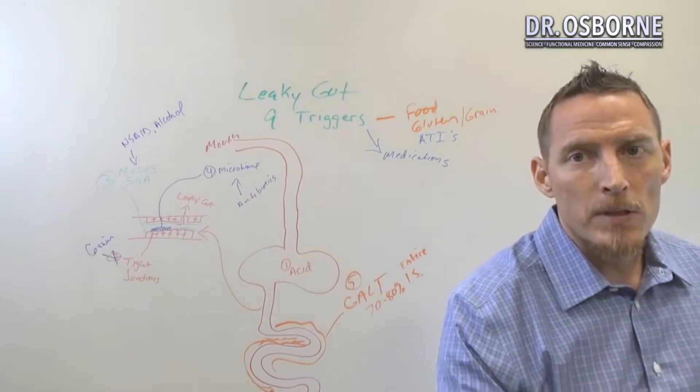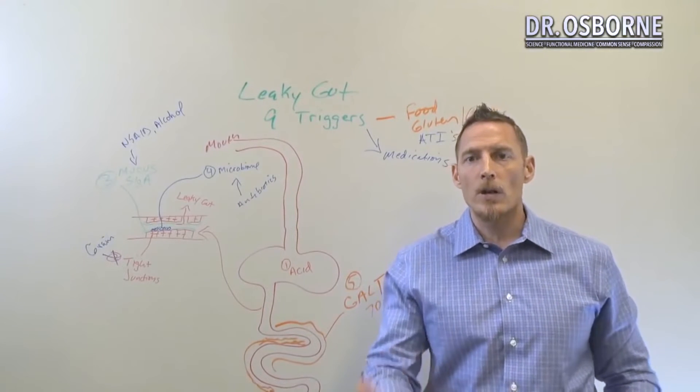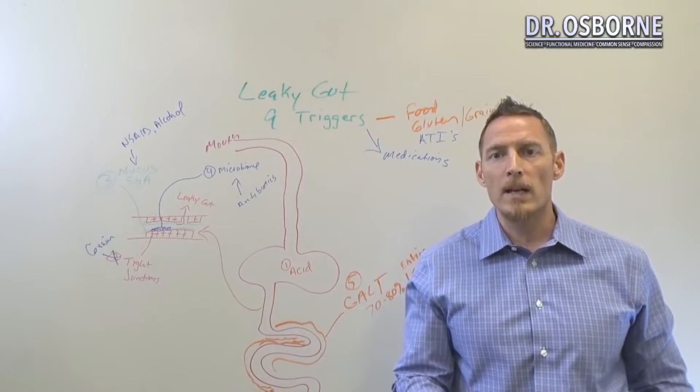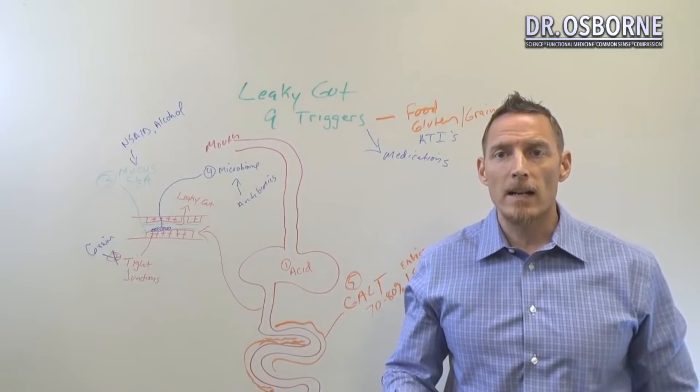Potatoes is one of the triggers on the leaky gut diagram. And the reason I put that in specifically is because a lot of people don't realize that there's a particular glycoalkaloid, which is a substance, a plant-based substance found in potatoes that for many causes leaky gut.